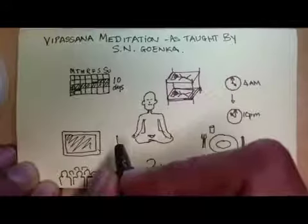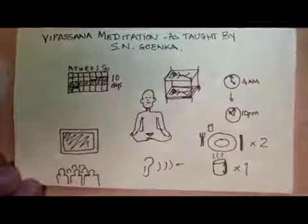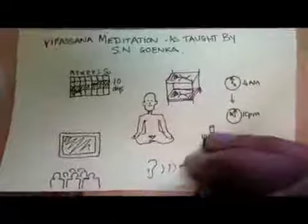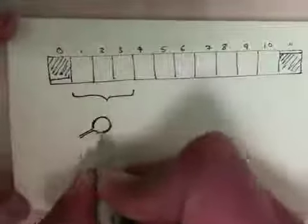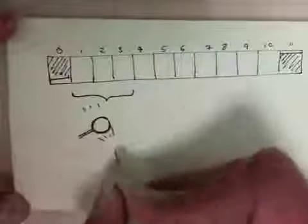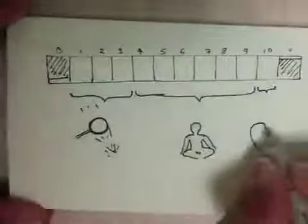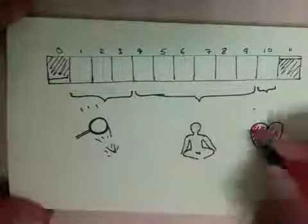In the previous video, I introduced the basic structure of a 10-day Vipassana retreat as taught by SN Goenka. During the first 10 days, you cover three broad types of meditation technique: concentration, awareness, and compassion. The first three days are spent in concentration meditation, the following six on awareness, and the last day on compassion.